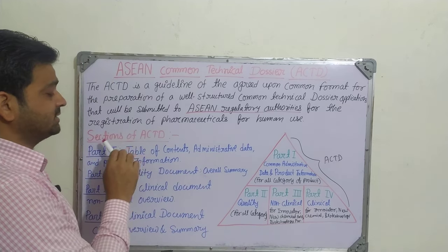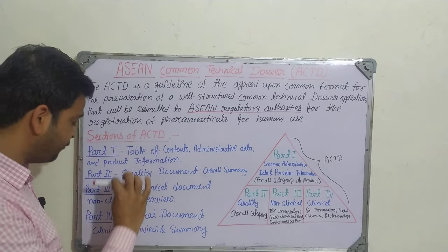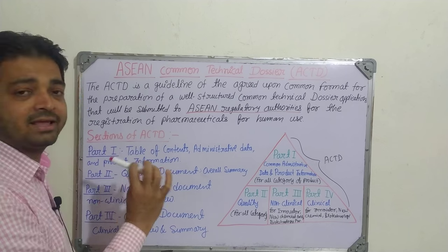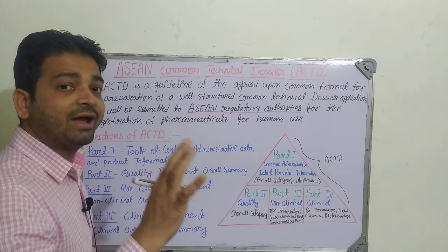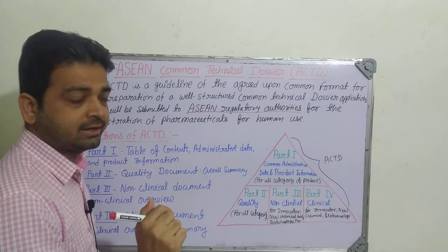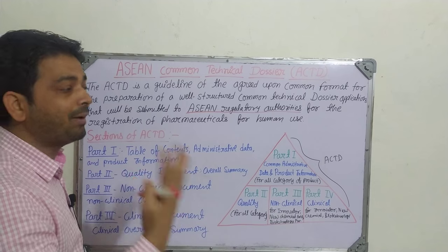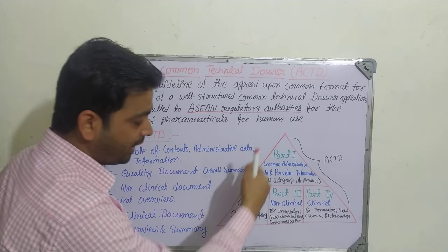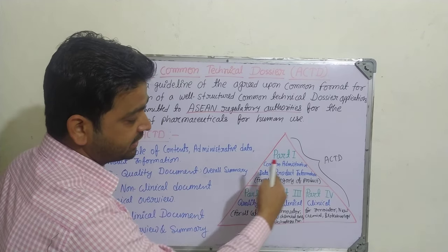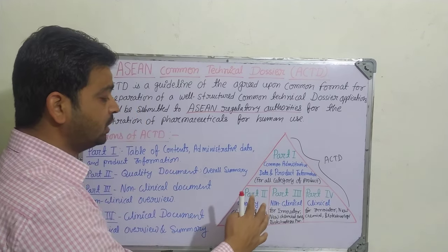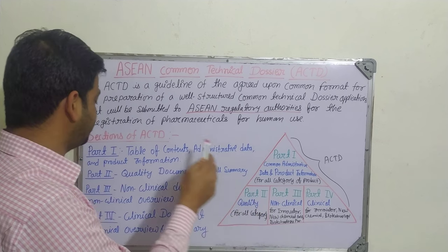The sections of ACTD — it is having four parts. Like in CTD we have seen five modules, here it is divided into four parts. Again, I am projecting a triangle model here, and in that way we are going to have these particular details.